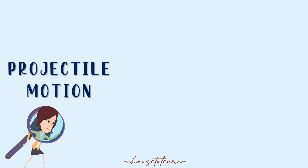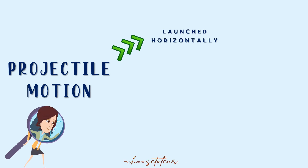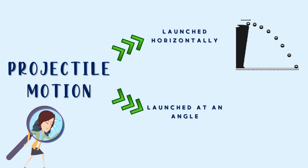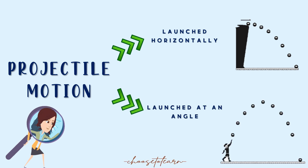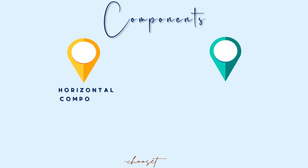There are two cases of projectile motion. The first one is projectile launched horizontally, and the second one is projectile launched at an angle. Both cases are composed of two components: horizontal component and vertical component.